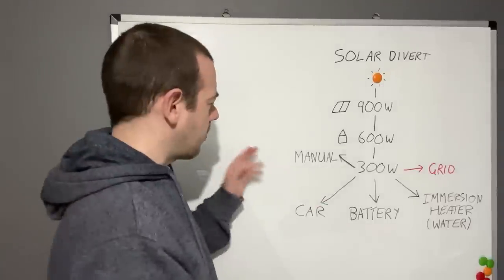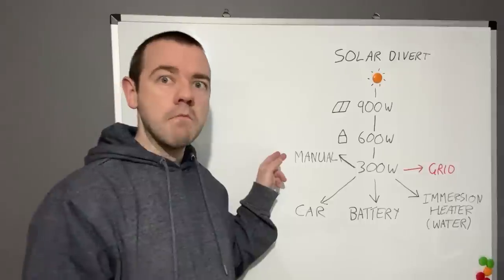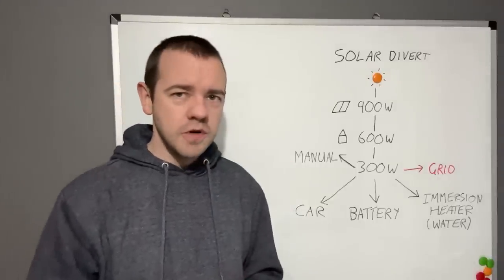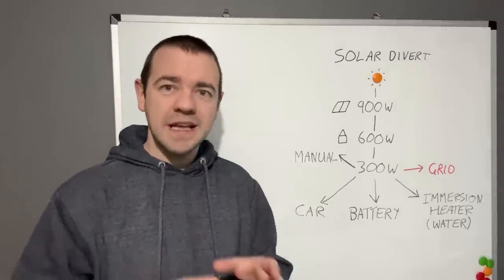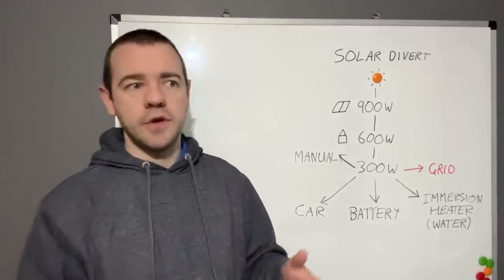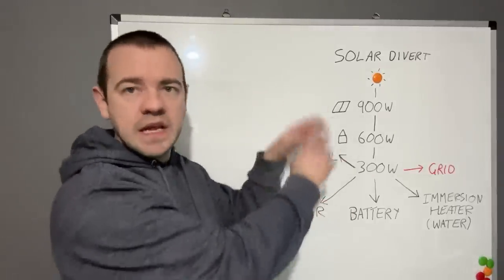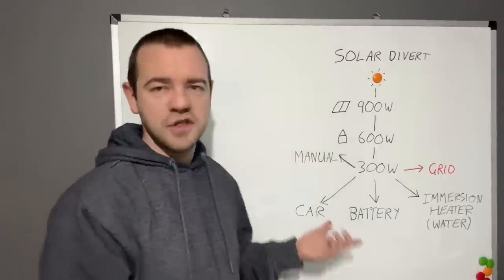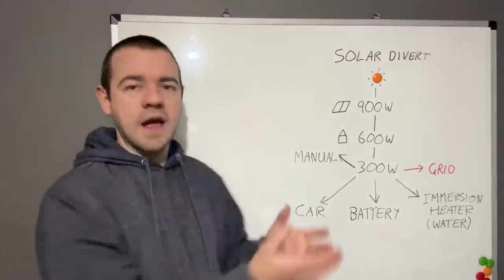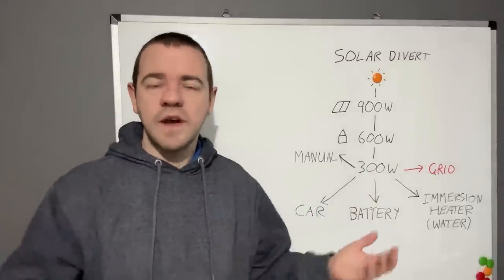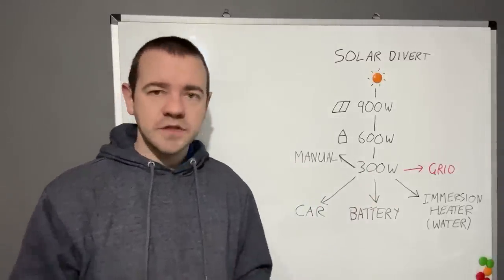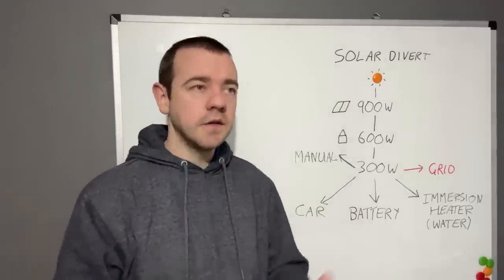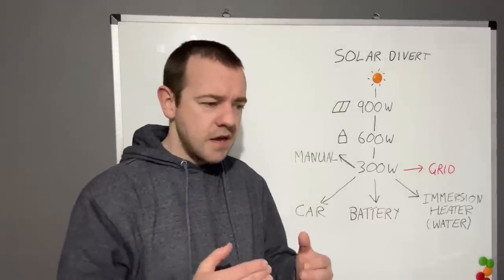Now this last option here, the manual option. This is almost a no-cost one, and it's not very effective, but it can at least utilize more solar than just leaving your house as it is. This is essentially turning things on. So if you have, let's say, 500 watts of excess solar right now and you think, well, the sun's out, it looks like it's going to be here for a while, you know that there's no clouds due.